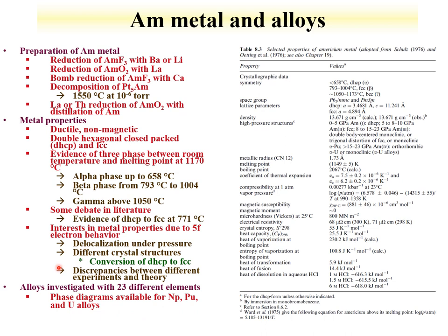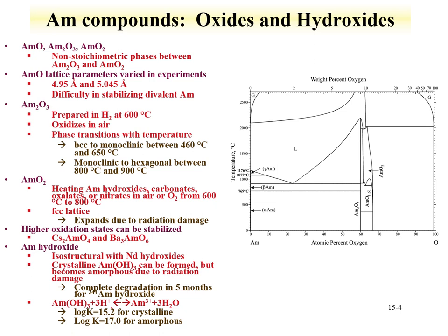Other important americium compounds for the nuclear fuel cycle include oxides and hydroxides. Three oxides have been examined and evaluated: the monoxide, the Am2O3, and americium dioxide. There is difficulty in formation of the monoxide because of the instability of divalent americium. Looking at the literature, there are varying ranges of the lattice parameters, which is always indicative that the compound is not stable and that further experiments should be performed.